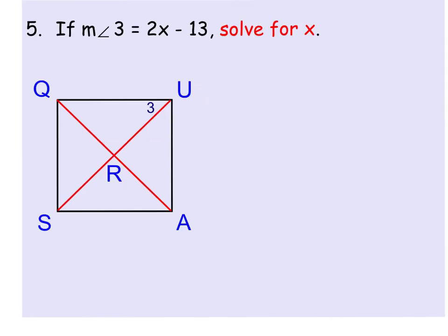In order to do this problem, we can see that we are working with the measure of angle 3. And because we know that this is a square, the first thing that we know is that this is a 90 degree angle. Angle U is a 90 degree angle. And then we also know that the diagonals bisect the opposite angles, which means angle 3 has been bisected.